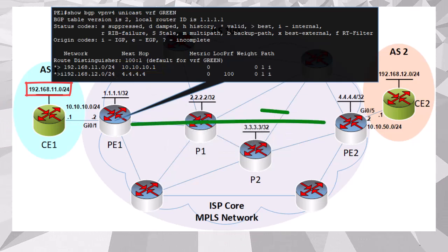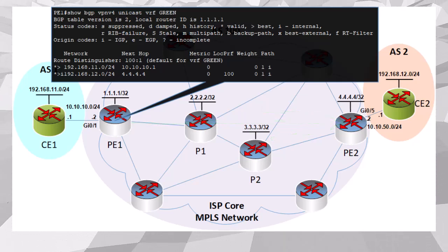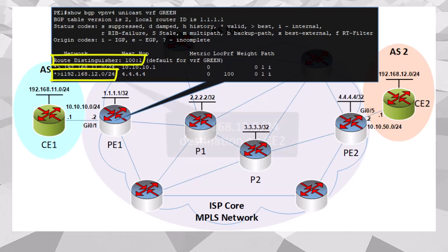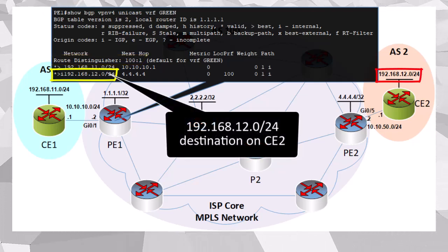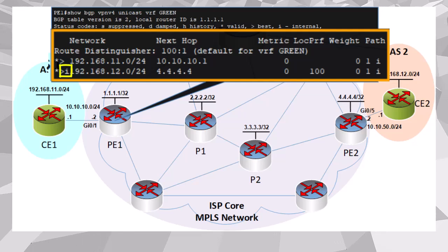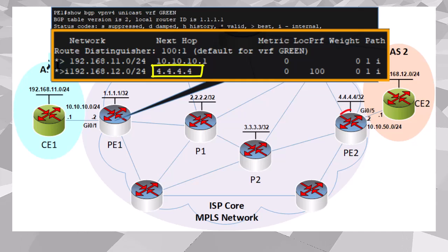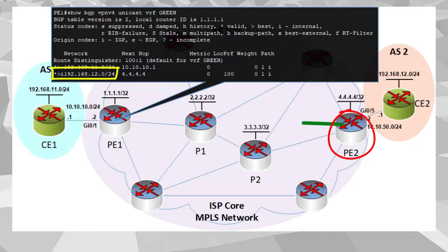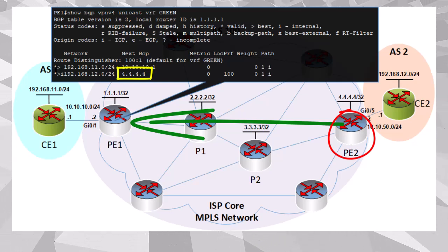PE1 also has a second route, also using the RD of 100:1, and that's the route to 192.168.12.0/24, which is our customer destination on CE2. We can see that this route has been learned via IBGP, and the next hop IP is 4.4.4.4, which is the PE2 router. So this is a VPNv4 route learned via IBGP from PE2, and we have also learned the next hop IP, which is that of PE2.